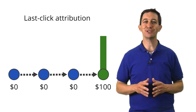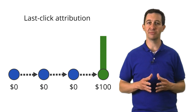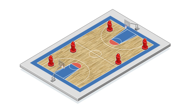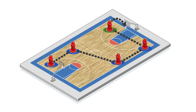Attribution is a lot like scoring points in a basketball game — it takes more than one player to make it happen. One player scores the goal, but other players may help or assist in the process. If you were coaching a basketball team, you'd want to understand which of your players score goals and which of your players assist in the scoring. This helps you understand how your team works together to be more successful.